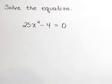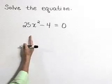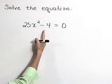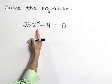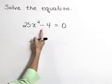Solve the equation 25x squared minus 4 is equal to 0. This is a quadratic equation, and this left side fits the form of a difference of squares.